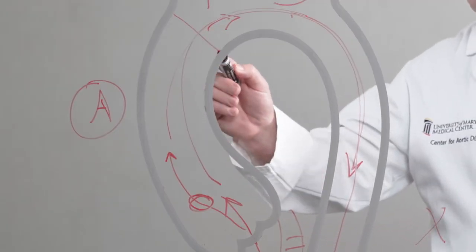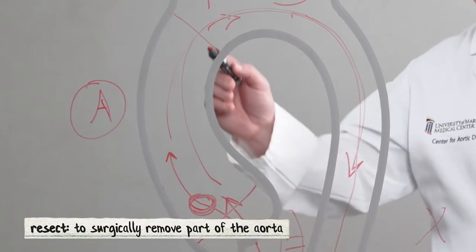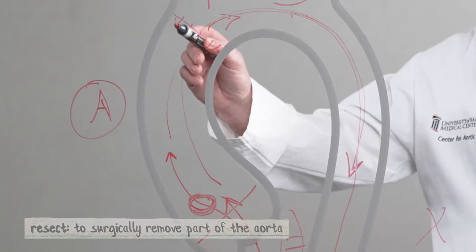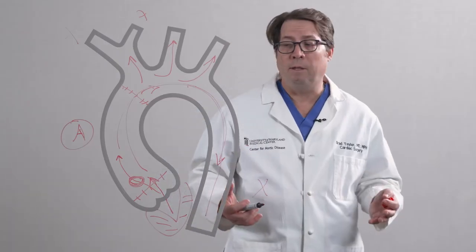Traditionally, we'll resect this portion of the torn aorta, take out the tear, and replace the ascending aorta with a piece of manufactured tubing that replaces that blood vessel.